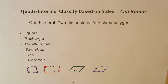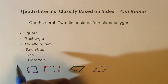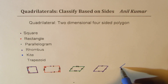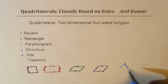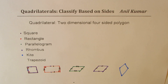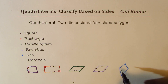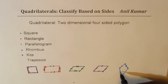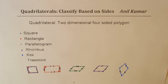Now let's look at the kite. This is a very special quadrilateral which looks like a diamond. But to be specific, all sides may not be equal. Normally, we will have one pair of adjacent sides that are equal. So that forms a kite.